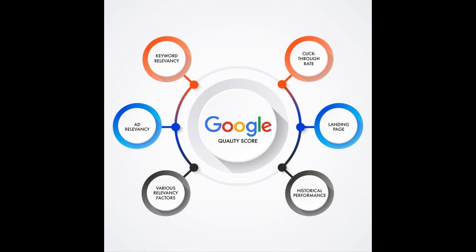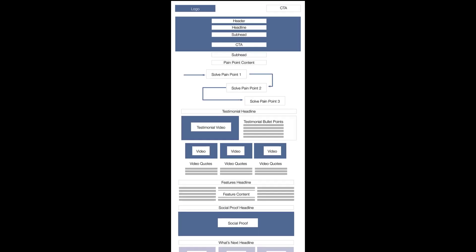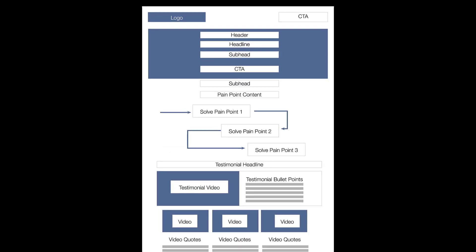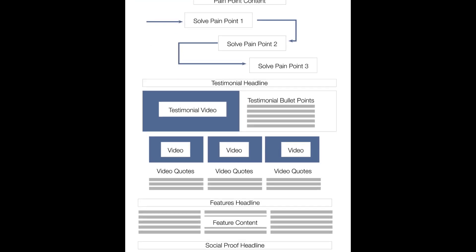Advertising platforms use a similar SEO algorithm to determine your quality score — an arbitrary score given to each page on how it relates to the keyword. This helps advertising platforms keep irrelevant information off of certain searches, but it also allows them to artificially inflate the price of a click. The code structure for this type of page is similar to the SEO structure with a few major differences.